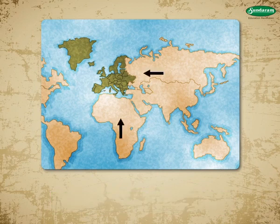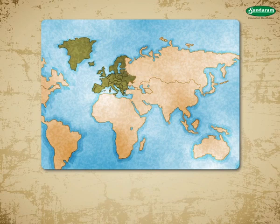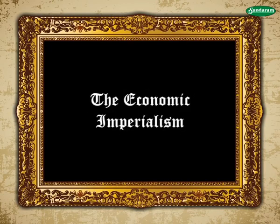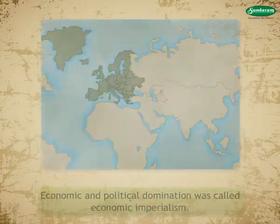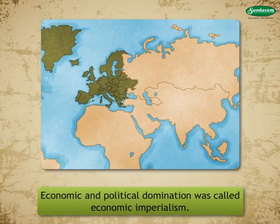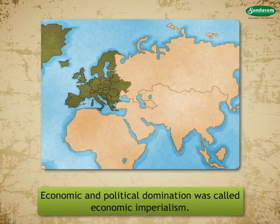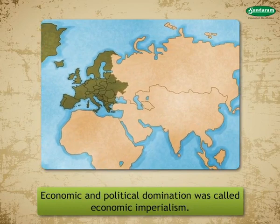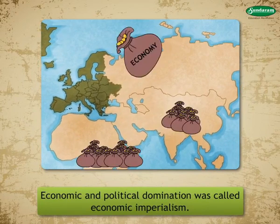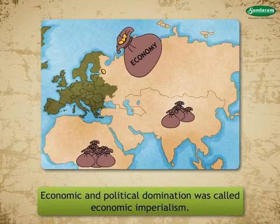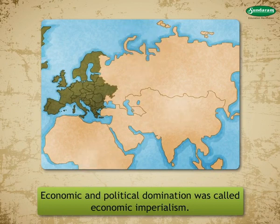Now that we have seen the important reasons for imperialism, let's understand the meaning of economic imperialism. The developed nations stripped the undeveloped nations of their natural resources, making them even weaker. Such economic and political domination was called economic imperialism.